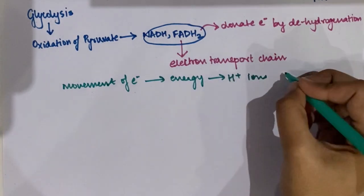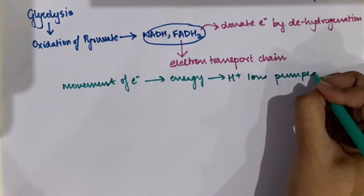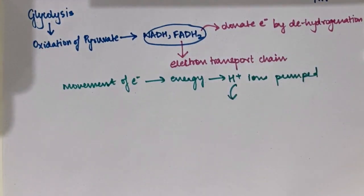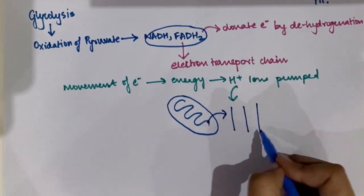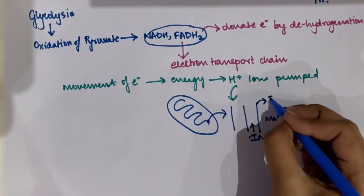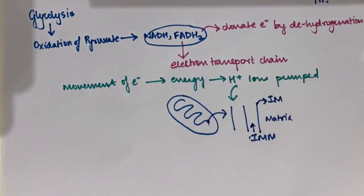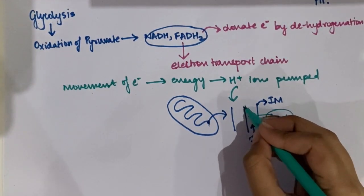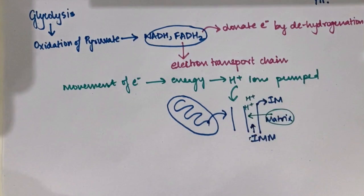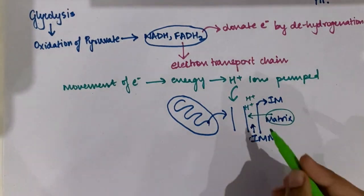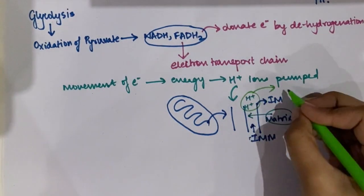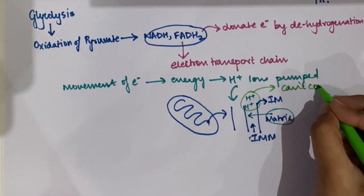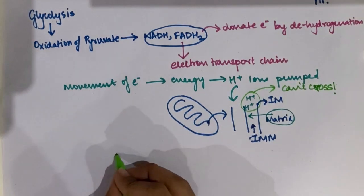The energy released due to the movement of these electrons contributes to the movement of hydrogen ions from the matrix of the mitochondria into the intermembrane space. The mitochondria is divided into an inner membrane and outer membrane, and the space between these is known as the intermembrane space. Hydrogen ions move from the matrix into the intermembrane space, causing a very high concentration of hydrogen ions there, which leads to a hydrogen gradient being formed across the inner membrane.